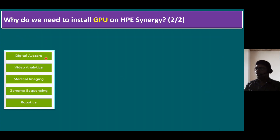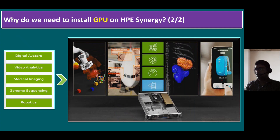Another use case: we can also use these GPUs for digital avatars, video analytics, medical imaging, genome sequencing, and robotic applications. These applications span multiple industries like data science, aviation, medical imaging, and mobile applications. The common thing is whatever infrastructure server you use — rack mount server, blade server, or HPE Synergy composable infrastructure servers — the key component is the GPU processor. The GPU is a must to run all these applications across a wide range of industries.